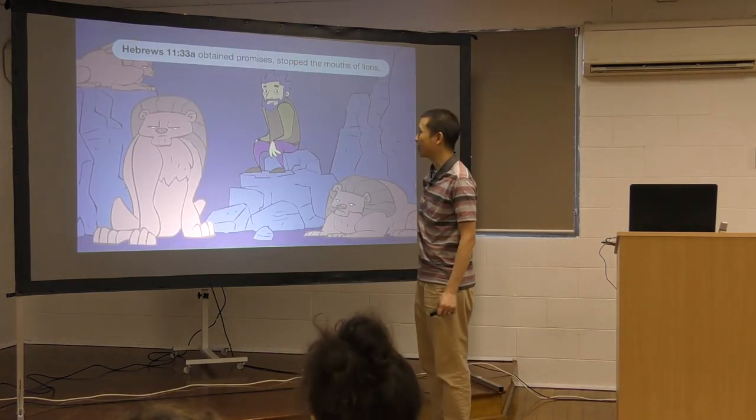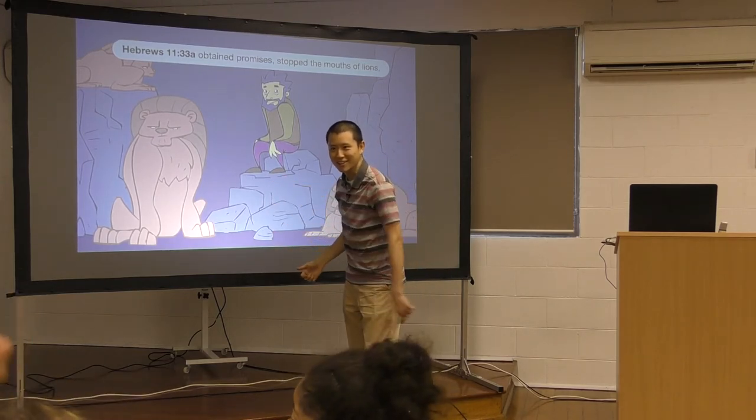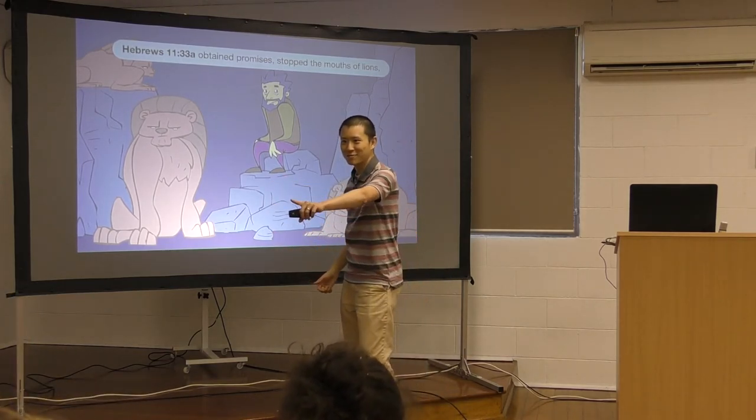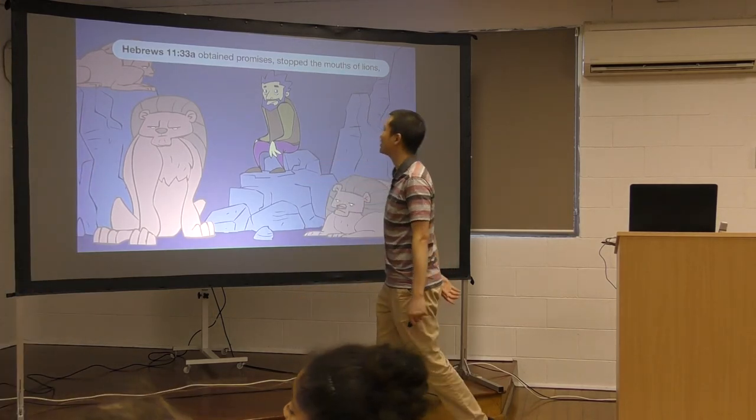Obtained promises. Stop the mouths of lions. Who's this? Do you remember who stopped the mouths of lions? Who was it? The angel. The angel did. But who was in there with the lions? Who remember? Mateo. Daniel. This is Daniel here in the lion's den. That's it.